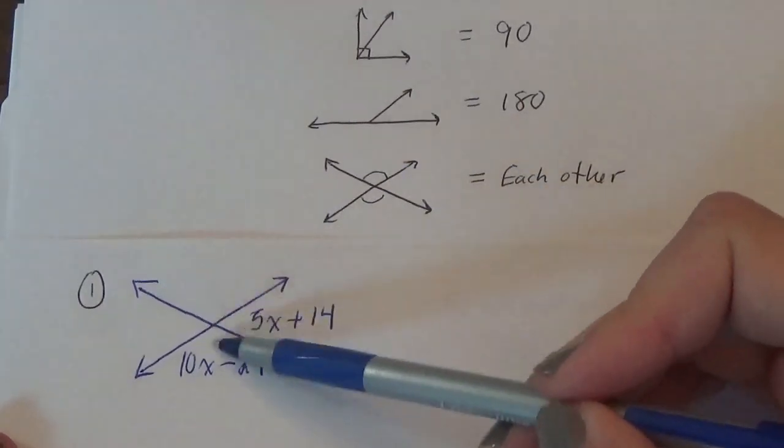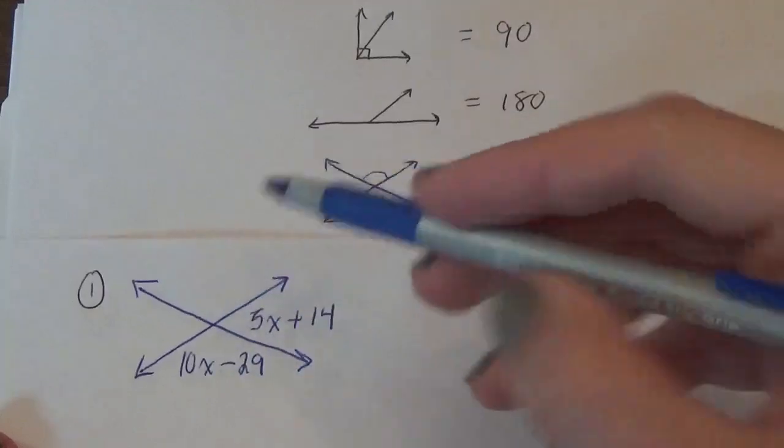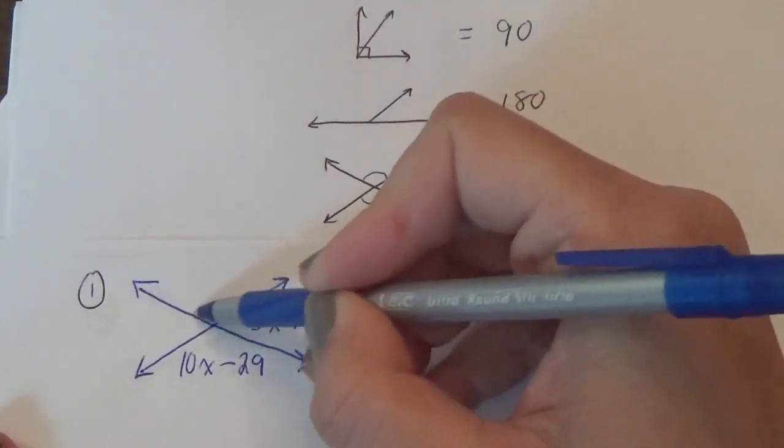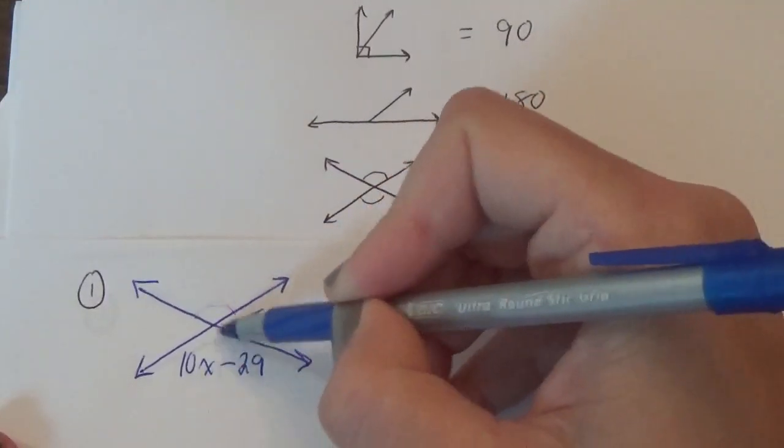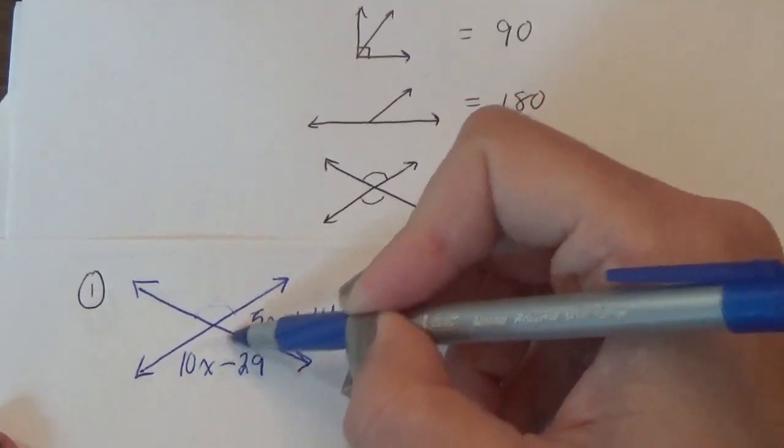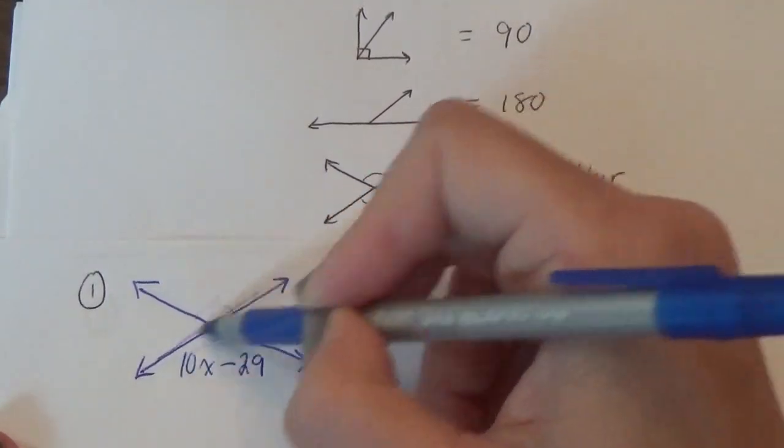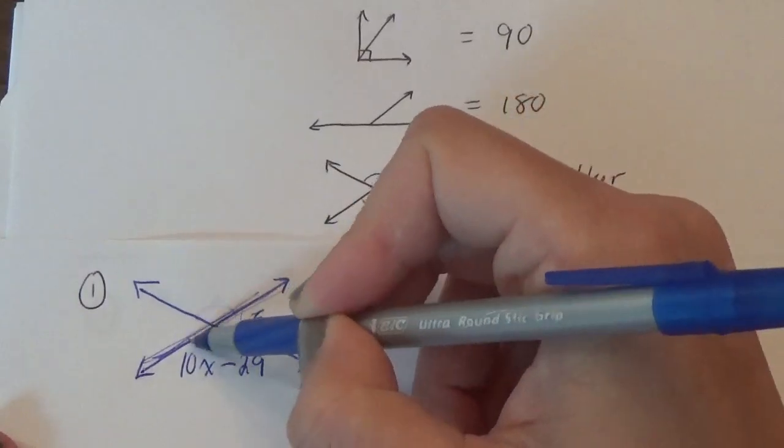If they were equal to each other, they would be opposite. Notice how this is an obtuse angle, bigger than 90. So is this one. They would equal each other. These two angles do not equal each other. They're on a straight line. So they're going to equal 180.